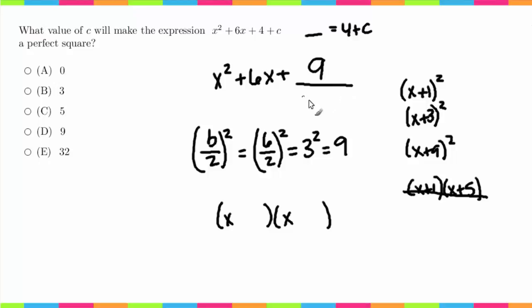Our options would be 1 times 9 or 3 times 3. In this case, 3 times 3 would work because it adds up to equal 6. So I would put a 3 here and a 3 here, and this has a repeated term, so this could in fact be written as (x + 3)², which is a perfect square.